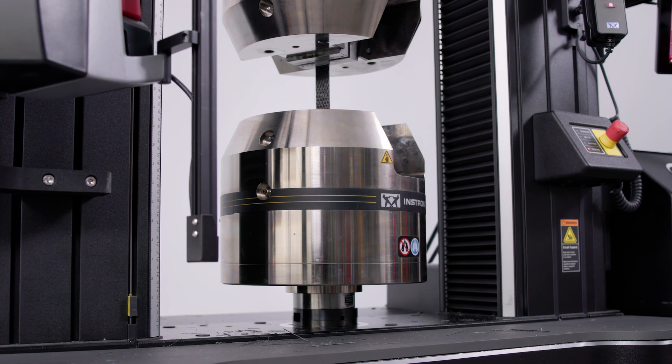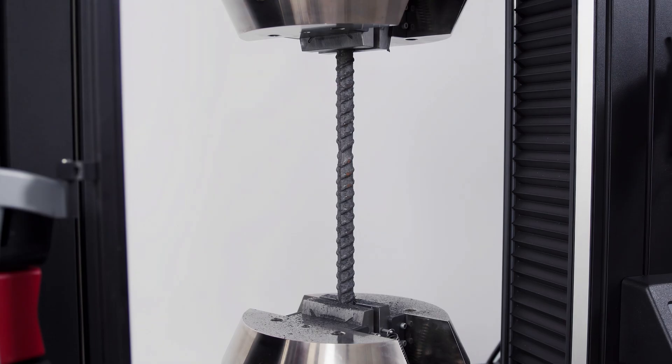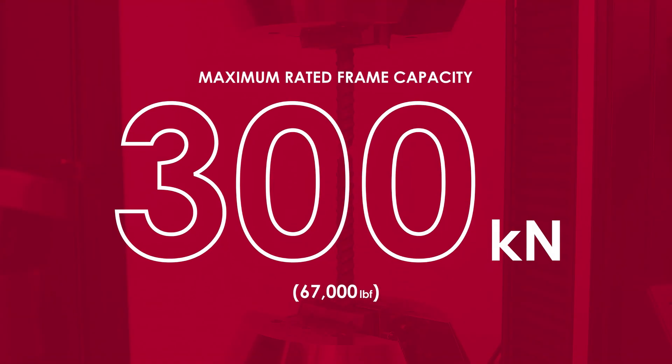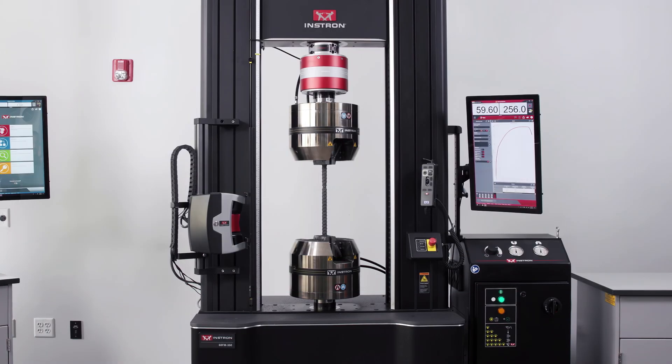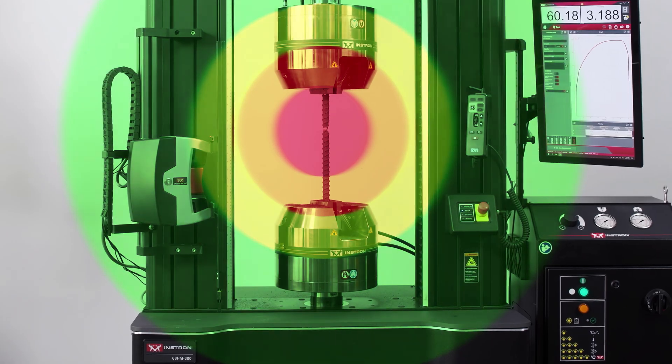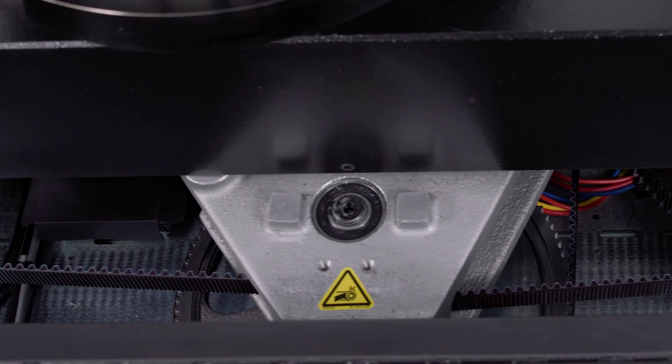The high-force systems are designed to withstand the shock and vibration resulting from continuous testing at the maximum rated frame capacity, which can be as high as 300 kilonewtons or 67,000 pounds-force. Control electronics have been isolated from high accelerations during violent specimen breaks, while critical mechanical components have been designed with shock in mind.